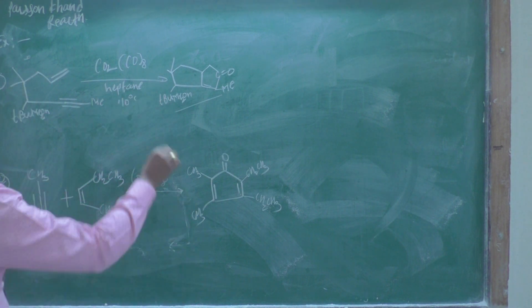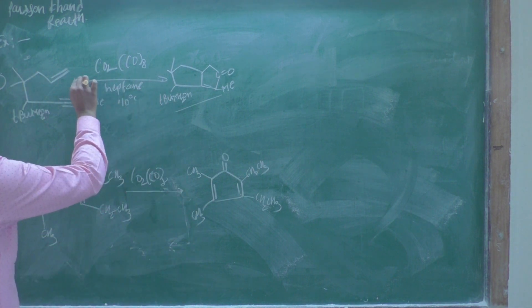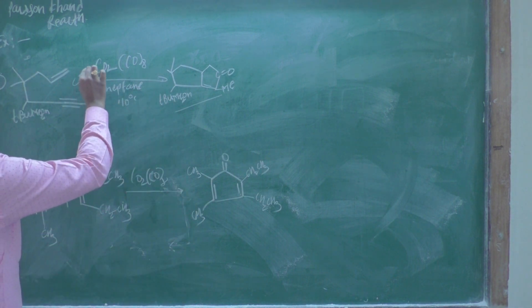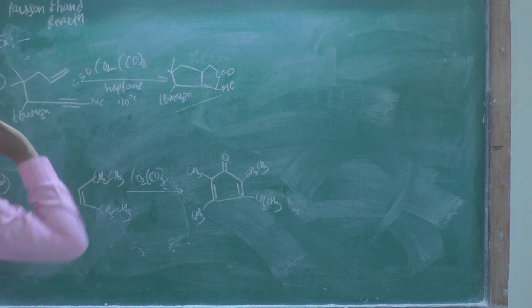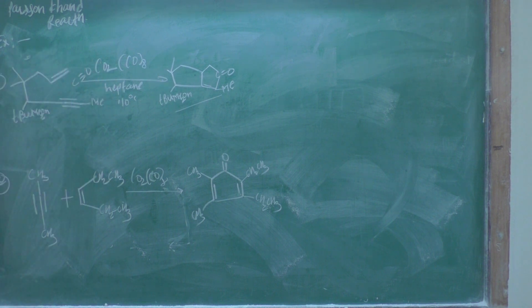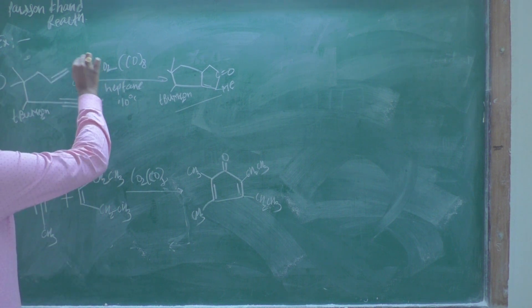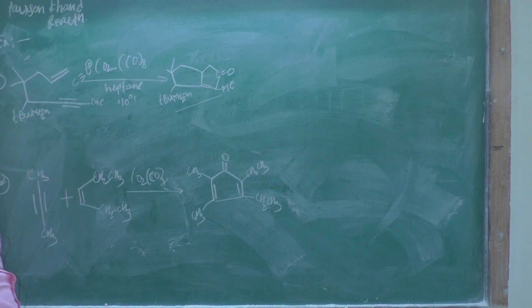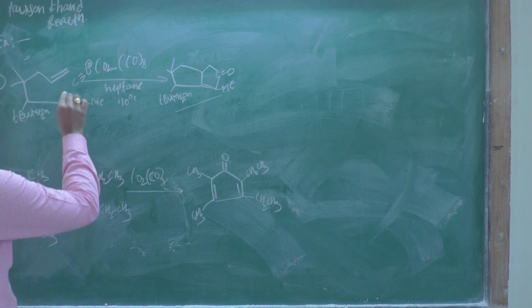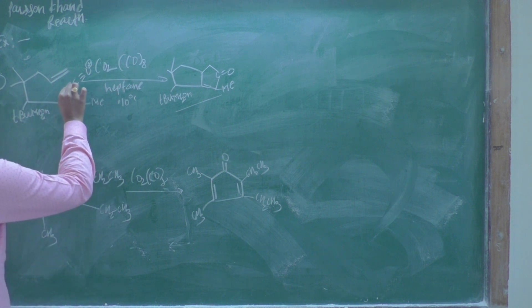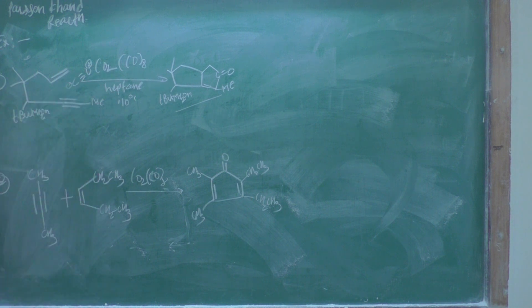You take one carbonyl group — that is C triple bond O. The oxygen contains the positive charge and the carbon contains the negative charge.